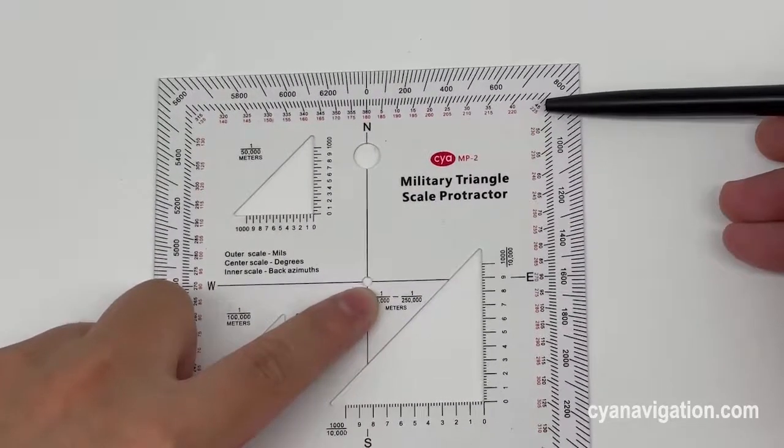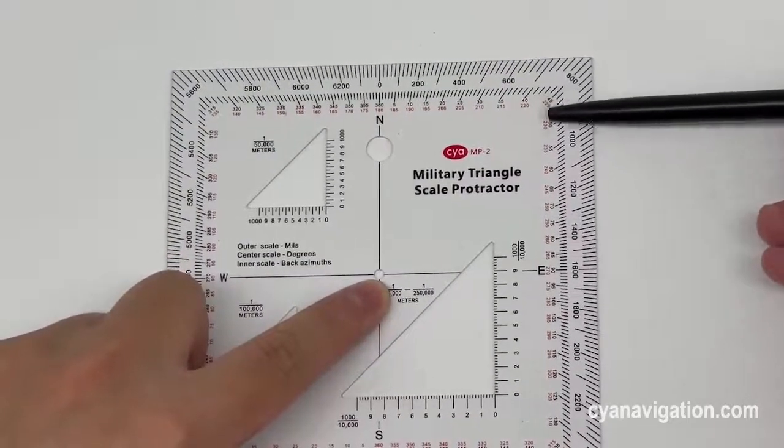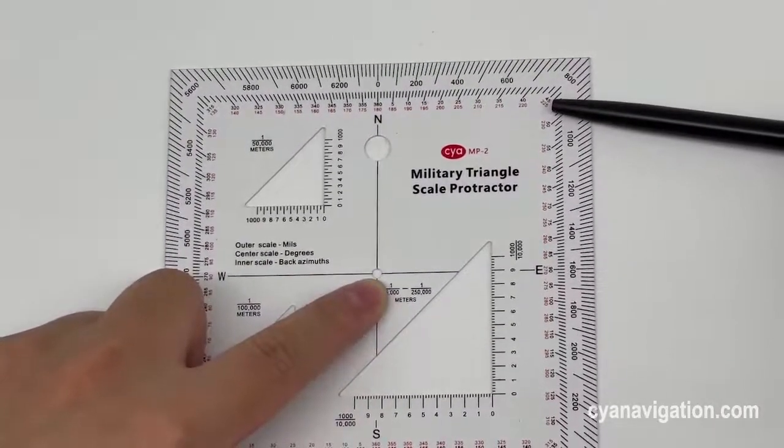Meanwhile, the inner scale in red is for back azimuth, which reads 225.